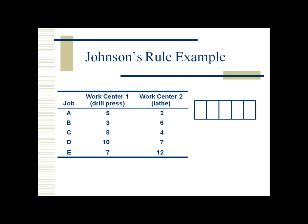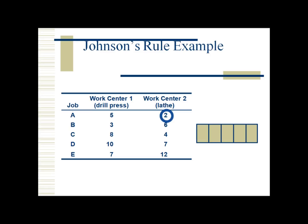For the first step of the process, we scan all information on either machine and look for the smallest number. Looking at the table, we can see that the number two is the smallest number, and it exists on the second machine. So job A should be sequenced last.